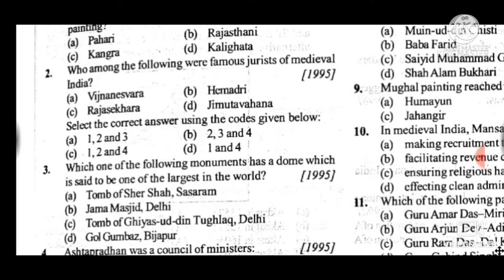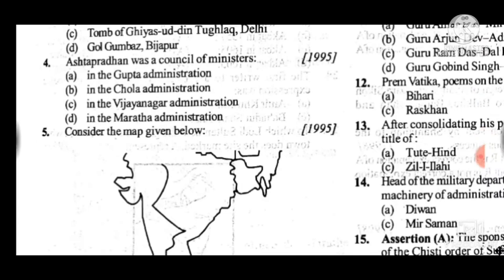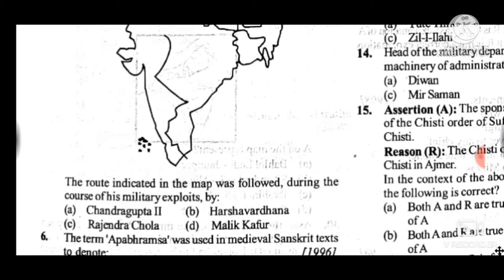Question 4: Ashta Pradhan was a council of ministers — answer is D, in the Maratha administration. Question 5 is a map-based question. The route indicated in the map was followed during the course of his military exploits by — answer is D, Malik Kafur.